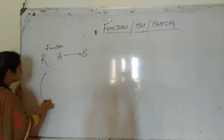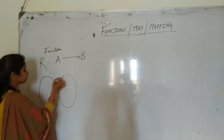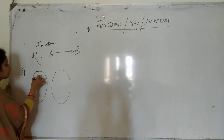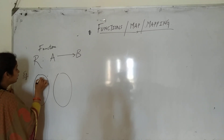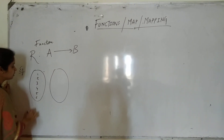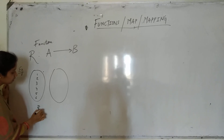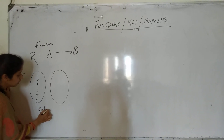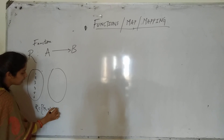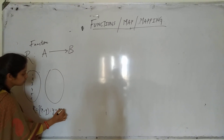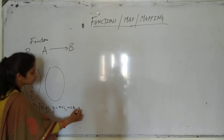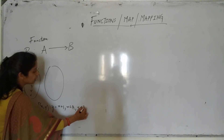If we see an example — previously I have taken one example in which there is 1, 2, 3, 4, 5 and 6. If the relation is defined as {(x, y) such that y = x + 1}, where x belongs to set A and y belongs to set B.